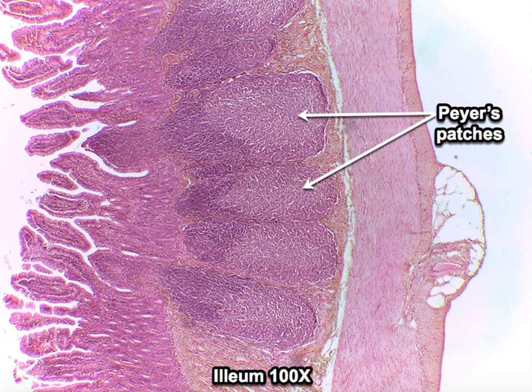Here we see another image of the histology of the intestine showing the Peyer's patch located in the ileum region of the small intestine. The Peyer's patches are found in the mucosa, monitoring for infection in the small intestine, helping to protect against infection that could spread through the small intestine, and helping to regulate the bacterial environment of the small intestine.